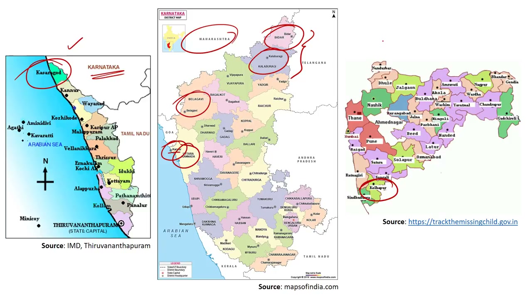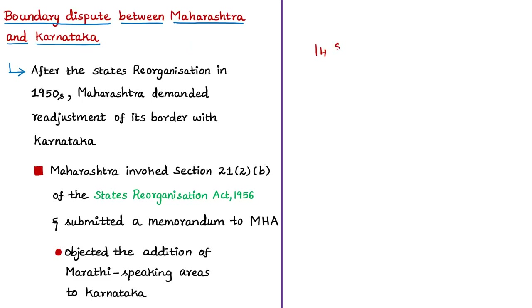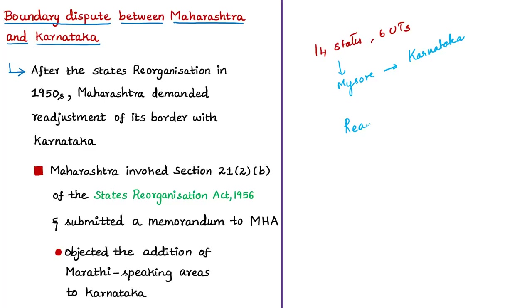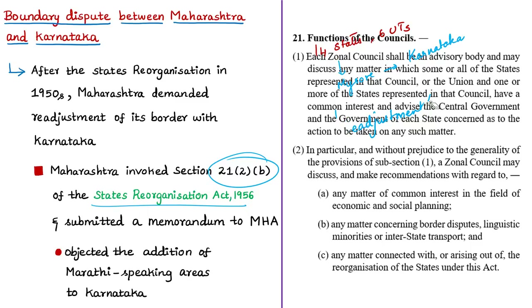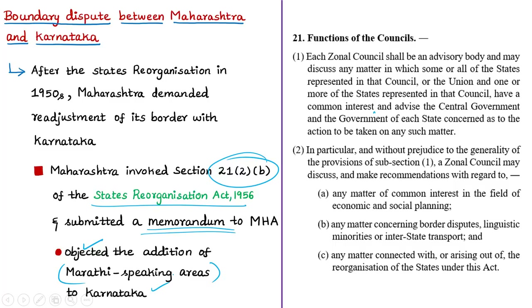The States Reorganisation Act of 1956 created 14 states and six union territories on November 1, 1956 — including the state of Mysore, later renamed Karnataka in 1973. After reorganization, Maharashtra demanded readjustment of its border with Karnataka, invoking Section 21, Subsection 2, Clause B of the States Reorganisation Act of 1956. Maharashtra submitted a memorandum to the Ministry of Home Affairs objecting to the inclusion of Marathi-speaking areas in Karnataka.